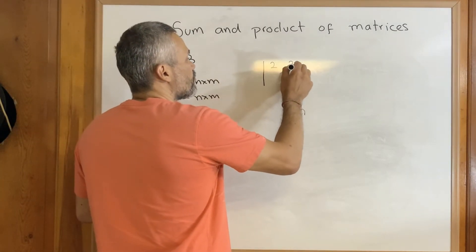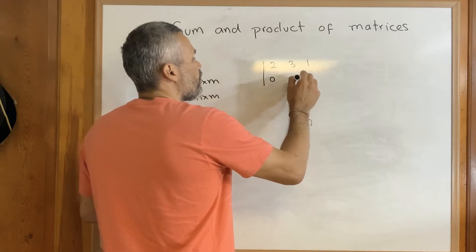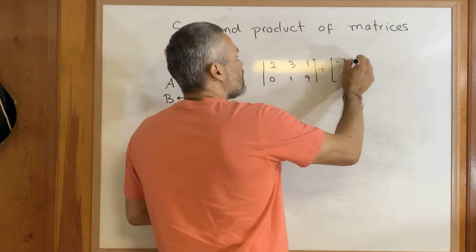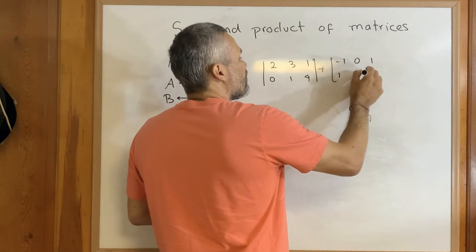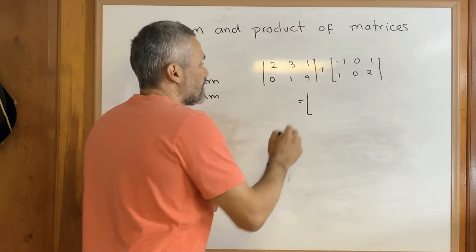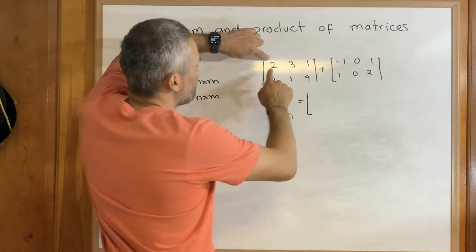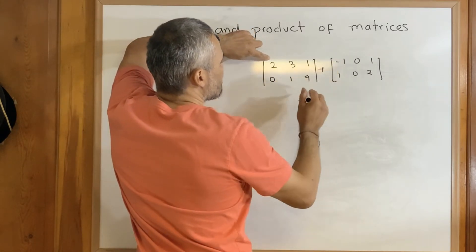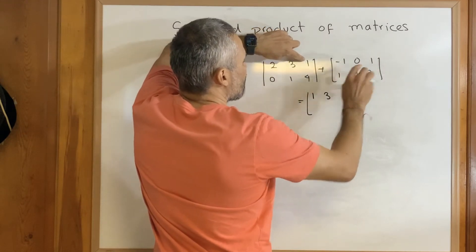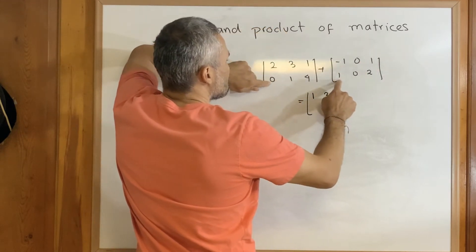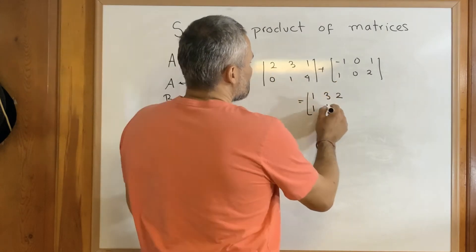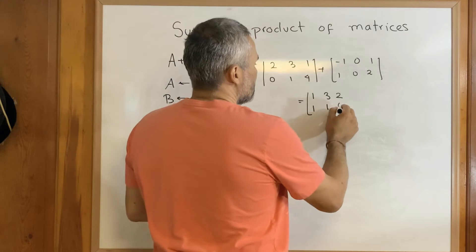For example, if we have the matrix [2, 3, 1; 0, 1, 4] plus [-1, 0, 1; 1, 0, 2], then we do the sum entry by entry. We get 2 plus -1 is 1, 3 plus 0 is 3, 1 plus 1 is 2, 0 plus 1 is 1, 1 plus 0 is 1, and 4 plus 2 is 6.